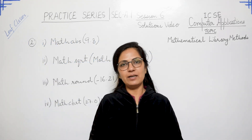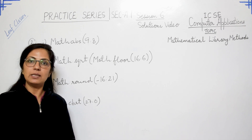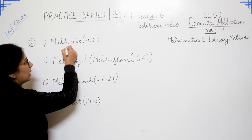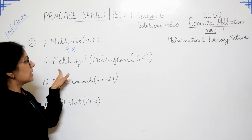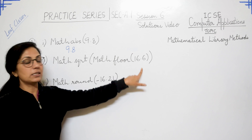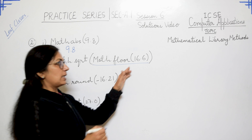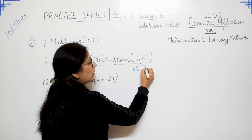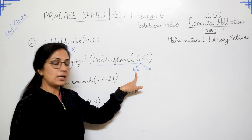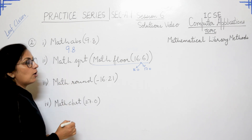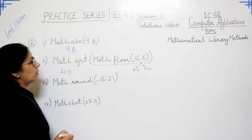Question number 2 asks what the following functions will return when executed. Part one: Math.abs(9.8). The abs function returns only the absolute value — the magnitude without any sign. So the answer is 9.8. Even if it were -9.8, the answer is still 9.8. Part two: Math.sqrt(Math.floor(16.6)). Two functions are nested — solve the inner bracket first. Math.floor(16.6): for 16.6, the nearest integers are 16.0 and 17.0; floor returns the nearest lowest, which is 16.0. Math.sqrt(16.0) returns 4.0, since sqrt also returns a double type value.